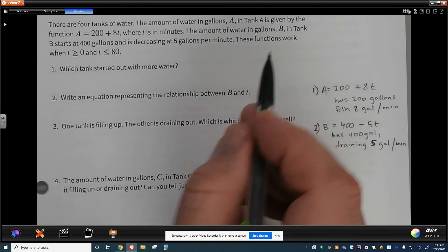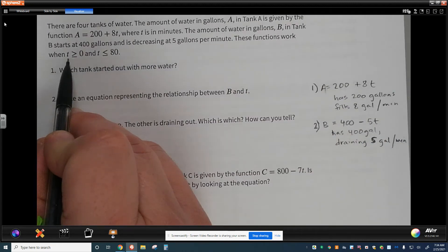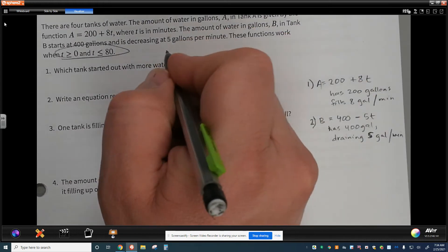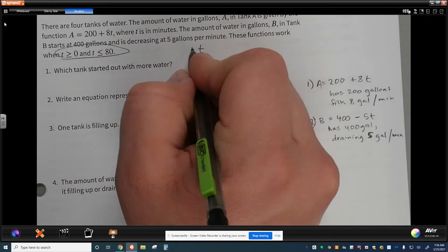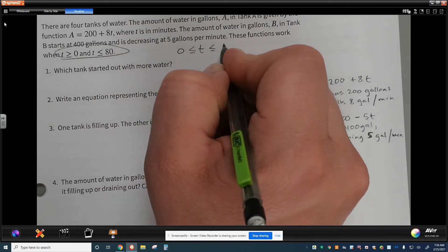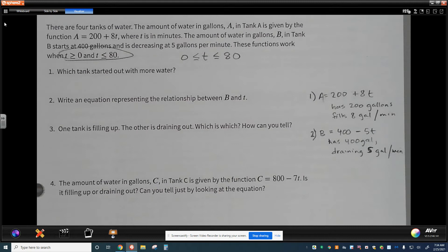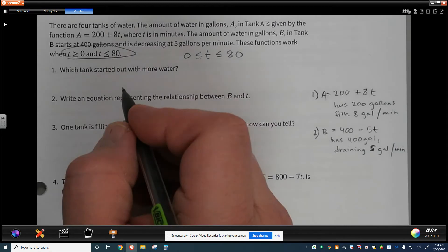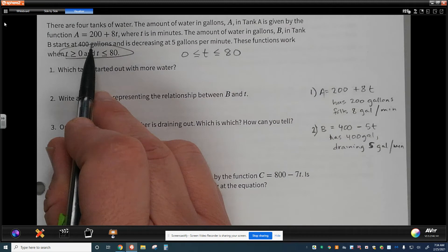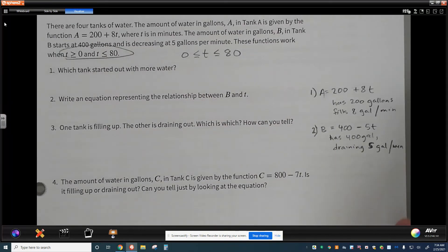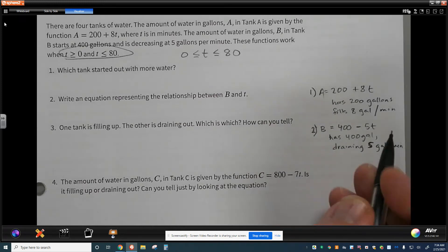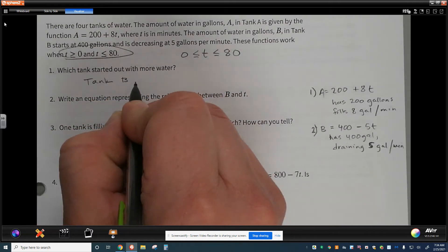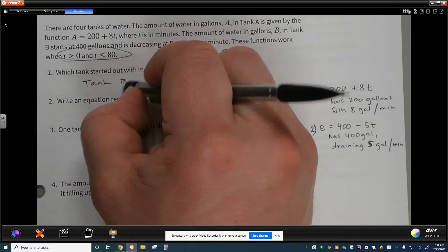Alright, here's another important piece that says these functions work when T is greater than or equal to 0 and T is less than or equal to 80. Another way to represent this right here would be to say that the time is going to be greater than or equal to 0 and less than or equal to 80. So what it's providing for us is a range of time when this will work. And we're going to find out why that's so important to help us out. It says, which tank started out with more water? Well, I think we're only talking about tank A and tank B. That's all we're given, or first two tanks. Of the two of them, tank A has 200 to start, tank B has 400. So we would say tank B.